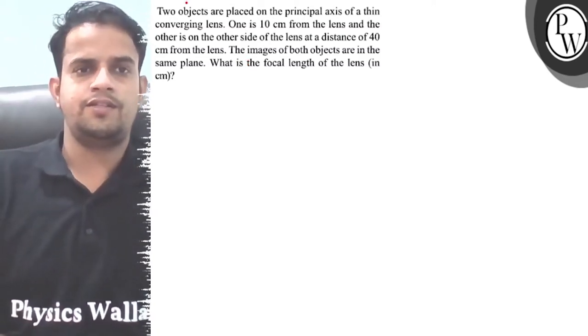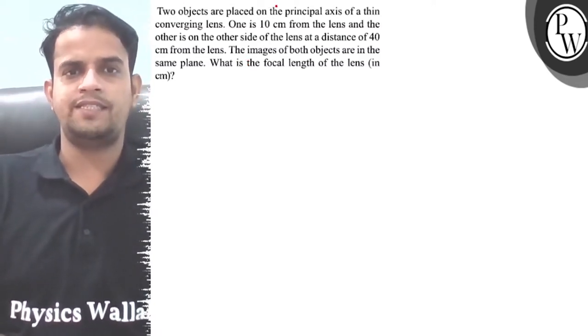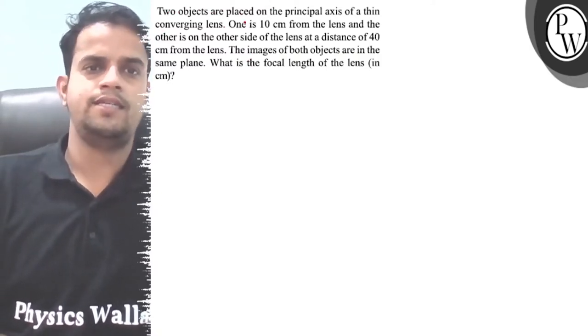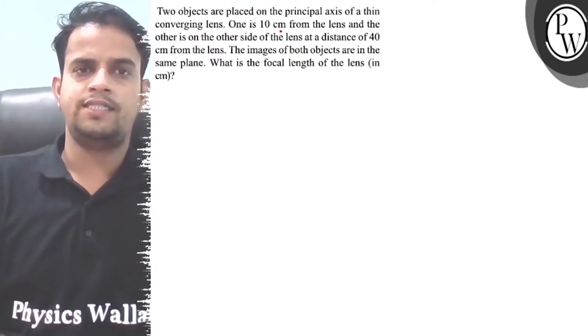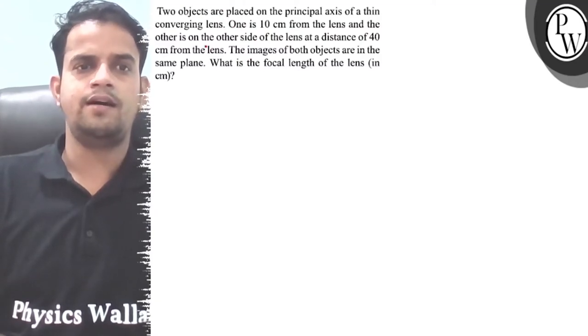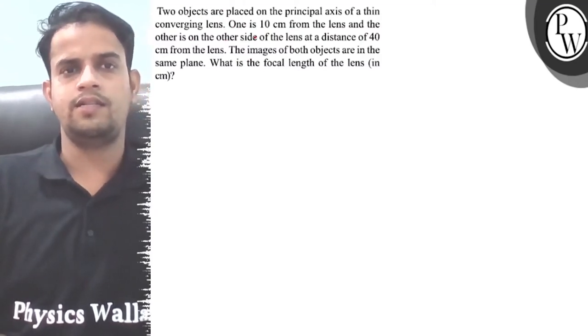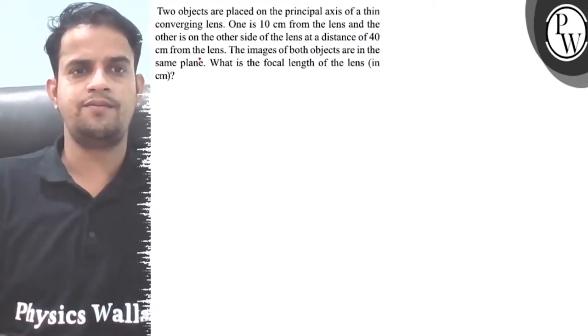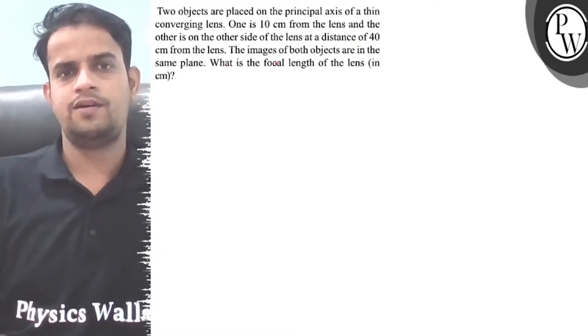Hello bacho, let's consider this question. Two objects are placed on a principal axis of a thin converging lens. One is 10 centimeter from the lens and the other is on the other side of the lens at a distance of 40 centimeter from the lens.